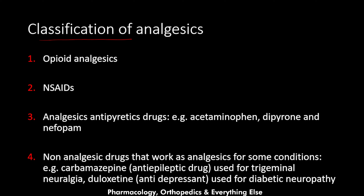Let's explain the classification of analgesics and see where acetaminophen sits in relation to those. Analgesics used in medicine are in four groups: opioid analgesics, which we already discussed; non-steroidal anti-inflammatory drugs (NSAIDs); the analgesic antipyretic drugs, which include acetaminophen, dipyrone, and nefopam; and finally non-analgesic drugs that cause analgesia for some conditions, such as carbamazepine for trigeminal neuralgia.